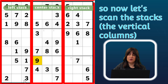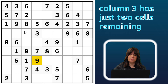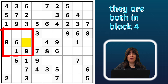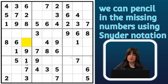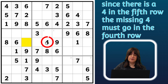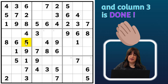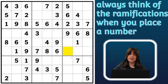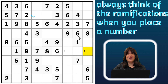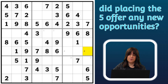Now I'm going to look at the stacks — those are the groups of three vertical columns. We have the left stack here, and right away I see that the third column has just two cells remaining, and both are in the same block — block four — so I can fill those in with Snyder notation. Counting to see what's missing: the four is missing, but there's a four here, so I can place the missing four here. And now there's just one cell missing in this column, and it's the five. Column three is done. And now because I just placed the four here, I can pencil in fours in two other cells. I couldn't do that before because there was only one four in the middle rank, but now I can pencil those fours in.